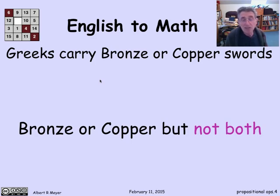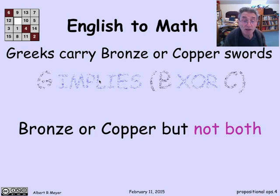Bronze swords are just way better than copper swords. They'll slice right through copper, they're much harder. It's not worth the weight to carry this inferior copper sword when you have a much better one. So we mean that Greeks carry exactly one of a bronze or a copper sword. You'd carry a copper sword if you didn't have access to a bronze one.